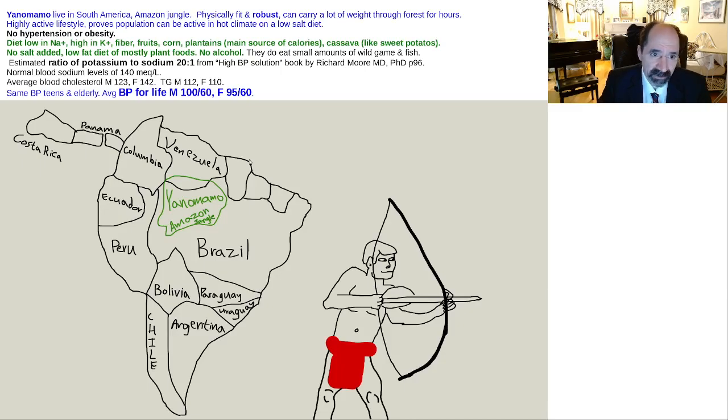Potassium, P for potassium, P for plants. Any plant-based diet is going to have high potassium. Richard Moore, the guy who wrote this book, High Blood Pressure Solution, he's an MD-PhD who devoted his whole life to studying the relationship between sodium, potassium, and high blood pressure. He estimates that the Yanomamo ate 20 times as much potassium as sodium.